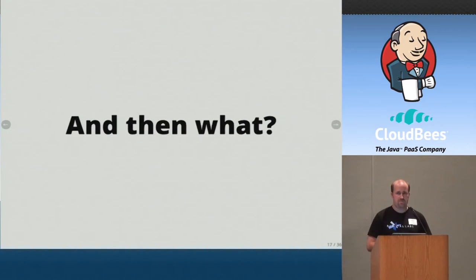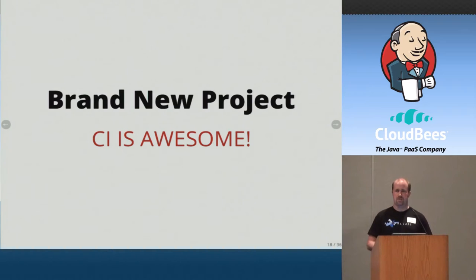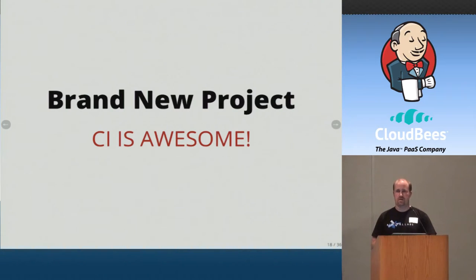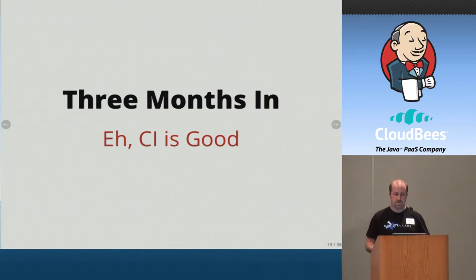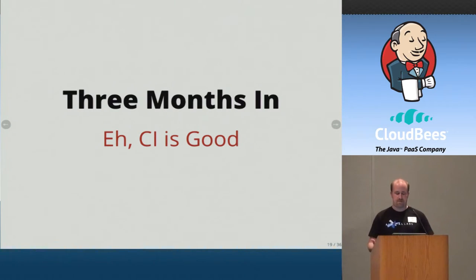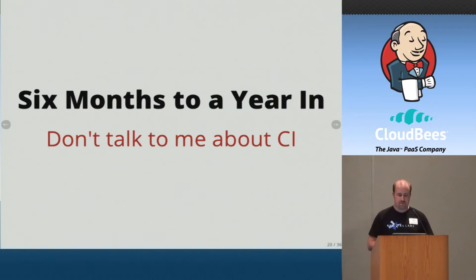Now we have people with CI set up on EC2, one green build, and one or two tests on a brand new project. At this point they're thinking CI is awesome because their build takes about 10 seconds. As time goes on — probably about three months in — tests are getting a little slower, you're up to a couple hundred or maybe 1,000 tests, CI is getting slower, and you're getting a couple random failures. By the time you're six months to a year in of really doing test-driven development, people are starting to hate CI.